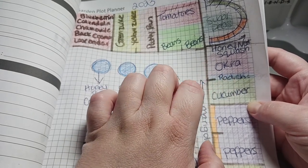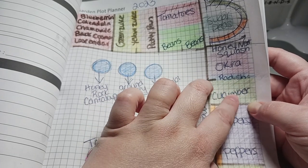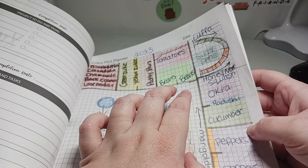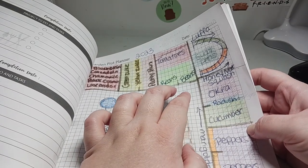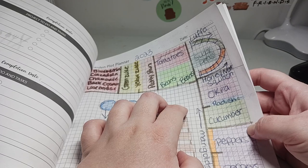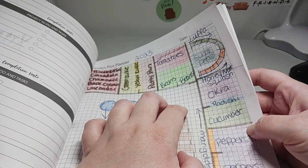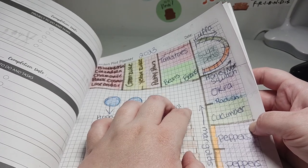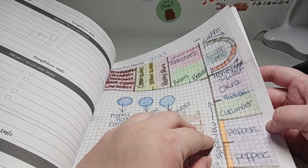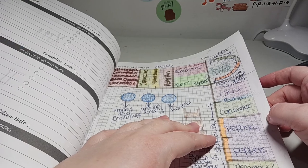I'm going to do two cucumber plants. We found that was more than enough last year because we grow a variety called silver slicer and they produce like mad. Honestly, we were getting like five cucumbers a day off these plants between the two that we did last year and it was more than enough. We have cucumbers still in the freezer just coming out of the wazoo.